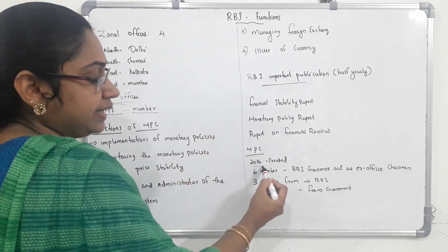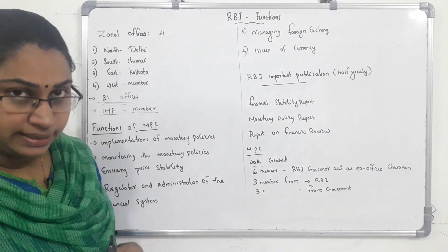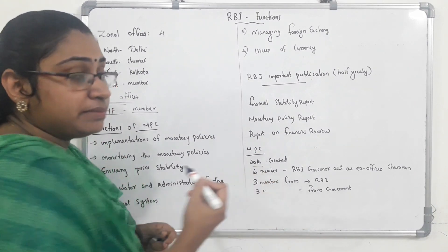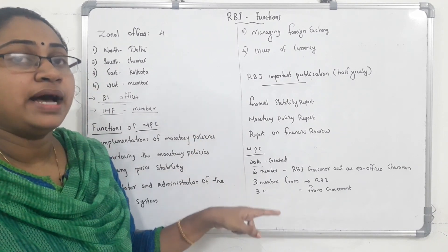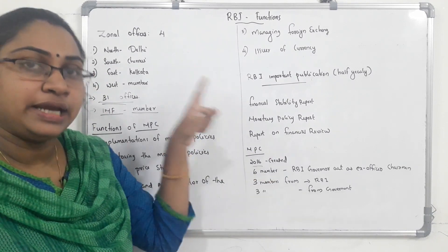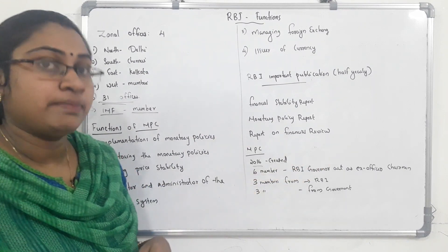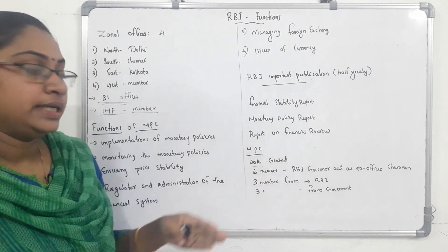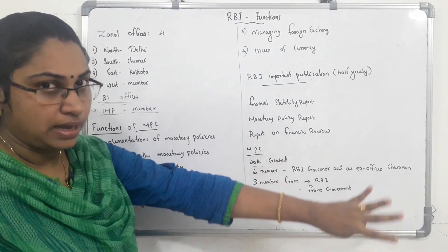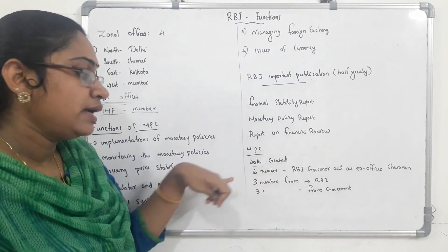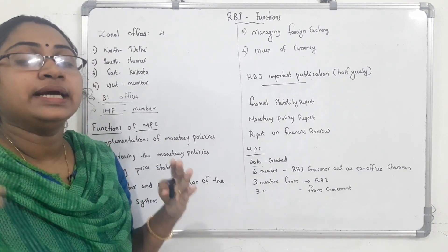The MPC is a committee with 6 members. The RBI Governor is the ex-official chairman. There are three members from RBI and three members appointed by the government.